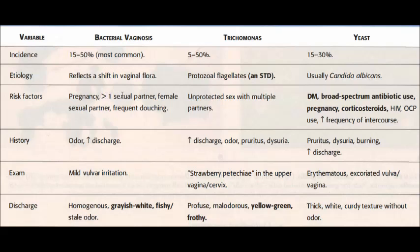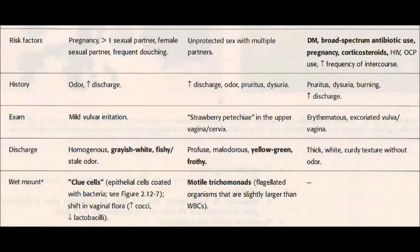Risk factors for bacterial vaginosis include pregnancy, new or multiple sexual partners, female sexual partners, and frequent douching — douching meaning the female is trying to clean the vagina, disrupting vaginal flora. For trichomonas, the risk factor is unprotected sex with multiple partners. For yeast, risk factors include diabetes mellitus and broad-spectrum antibiotic use.